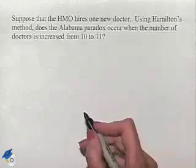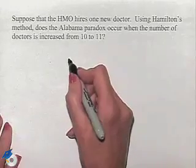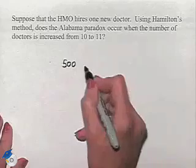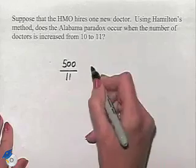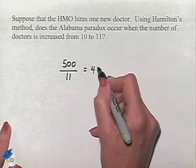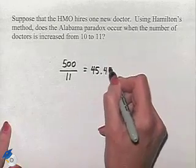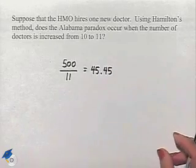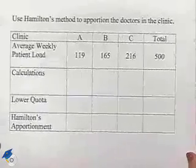So let's just go back where we have some space, and we're going to take our total number of 500 and divide by 11, since that's the number of doctors we're going to try to apportion. That's going to give us a value of 45.45. This is going to be the number that we're going to use to do our calculations.